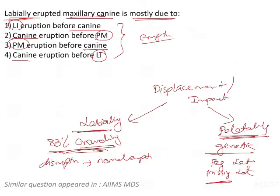Analyzing the options: the lateral incisor erupting before the canine is normal and will not cause labial movement of the canine. Canine erupting before the premolars is normal for the mandible but not for the maxilla. Premolar erupting before the canine is normal in the maxilla, so it will not cause labial displacement of the canine.